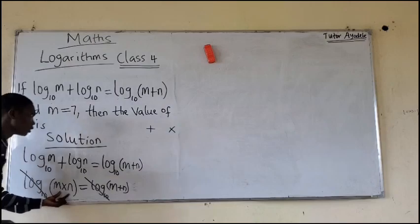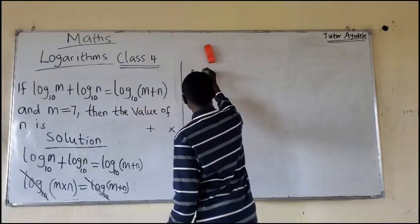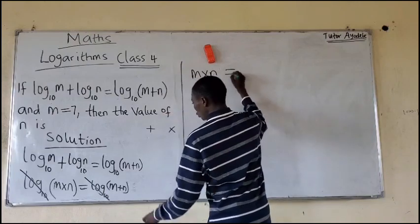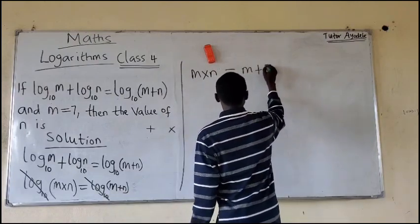So what are we left with here? We are left with M times N equals M plus N.